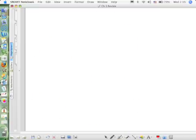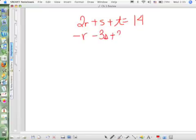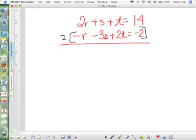So we skipped number 15 and we did number 17, right? Number 17 has three letters in all three equations, so we need to follow our steps. 2R plus S plus T equals 14. The second equation says negative R minus 3S plus 2T equals negative 2. My first step was first choose a variable. We're just going to get rid of R. I'm going to take the first two equations and eliminate R. How do I eliminate R? Multiply it by 2. I got to multiply this one by 2.